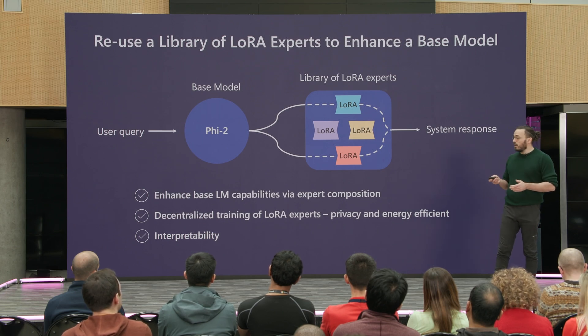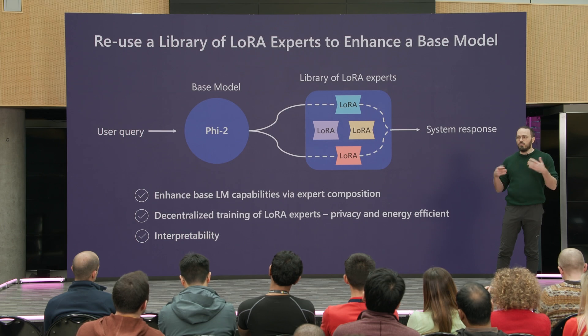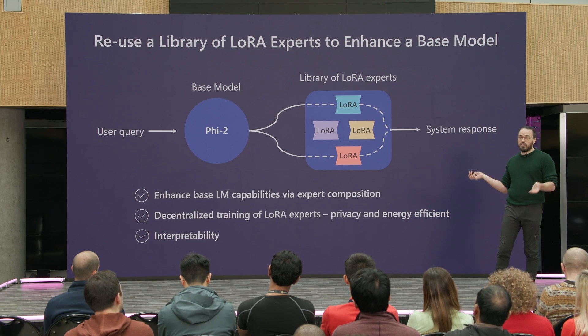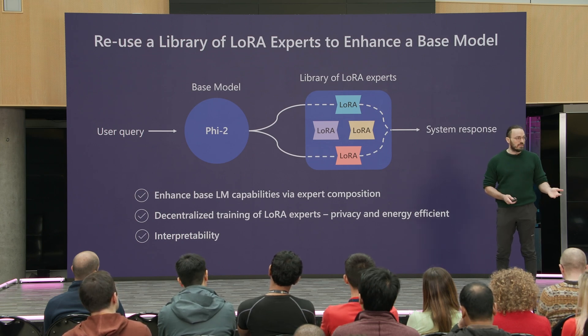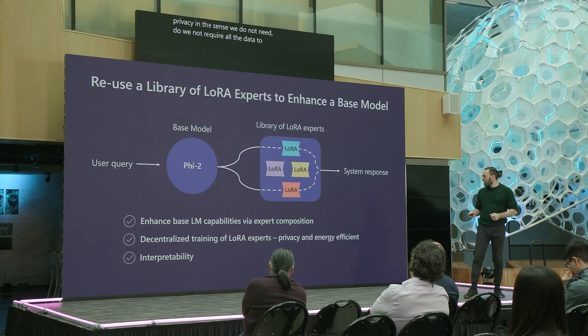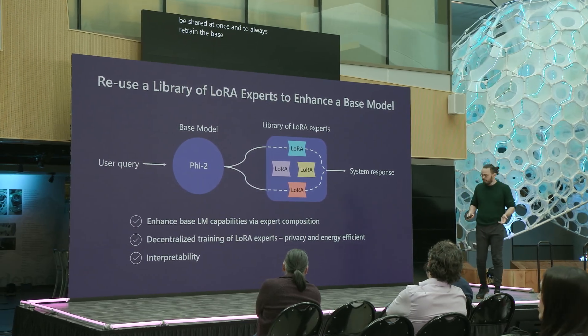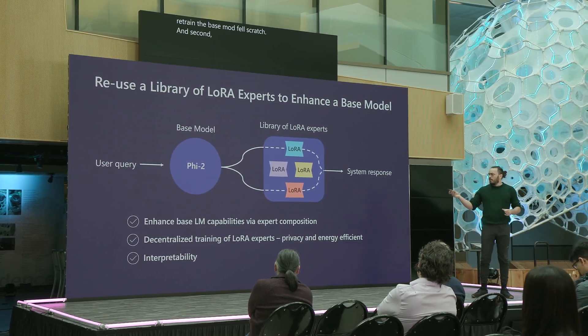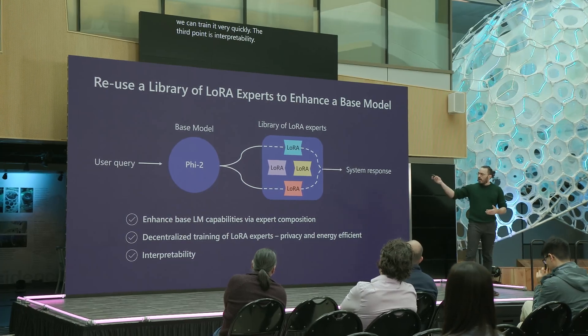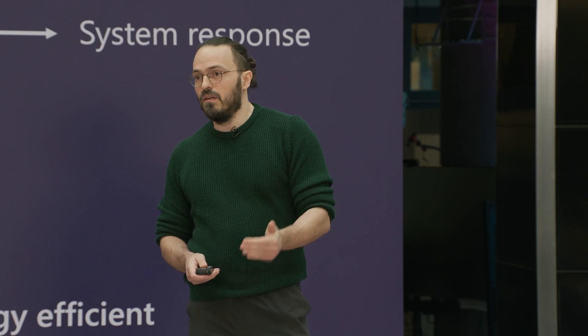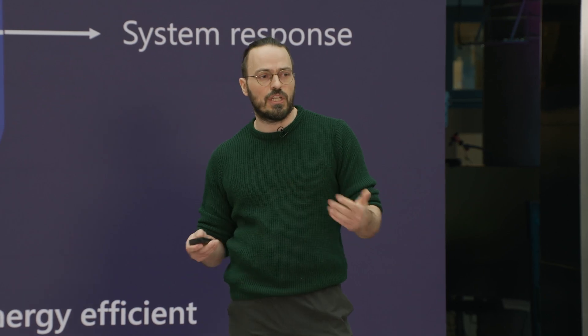The system has some desirable properties. One is that it enhances the base language model capabilities via expert composition, which resembles a mixture of experts, but with a big difference: these experts are not trained with the base model itself, but trained a posteriori. This leads to decentralized training of LoRA experts, which preserves privacy since we do not need to share all data at once or retrain the base model from scratch. Second is energy efficiency — these LoRA experts are very efficient to train. Third is interpretability: experts are associated with the tasks they solve, so upon seeing a user query, we can inspect which expert was activated and understand which capabilities are required.